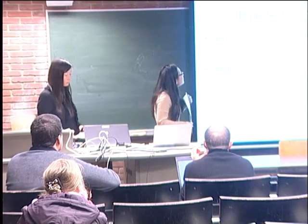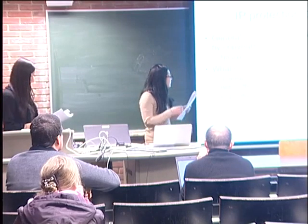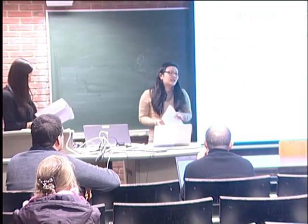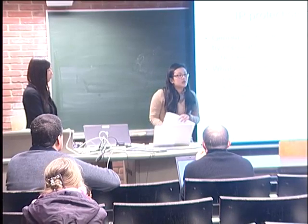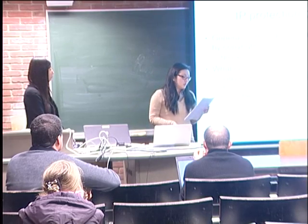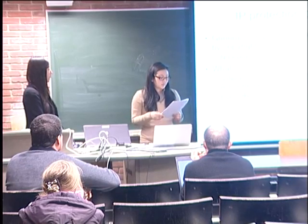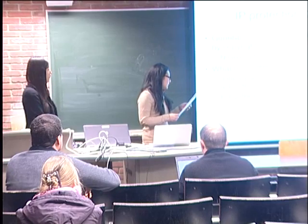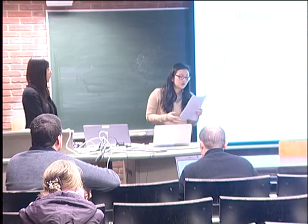In Belgium, computer programs are protected by copyrights through assimilation with literary works under the Berne Convention. It is not exactly the same as general copyright, but you can see it as a modified version of copyright for software. Because of the general principle that copyright doesn't protect the underlying idea of your program but only the original expression, you are allowed to copy the functionality of a computer program provided that you do not copy the source code but rewrite it to your own original code. The mere fact that software is developed in an open source context does not mean there is an exception to this general principle.